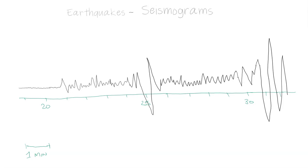Then comes the S wave — secondary — and then there will be a period of time where surface wave activity comes through later on at that seismic station. There are also different waves that come later called tertiary waves, but that is covered in a different video at a higher level. So here we have a seismogram.